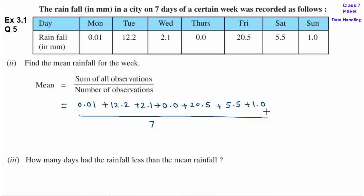अब हम इन numbers को add कर लेते हैं. Decimal numbers को जब आपने add करना है, तो एक चीज़ का ध्यान रखना है कि decimal के नीचे decimal आना चाहिए. First number है 0.01, इसके नीचे हम लिखेंगे 12.2. Decimal के नीचे decimal आएगा, same place वाले digits को एक दूसरे के नीचे लिखना होता है.